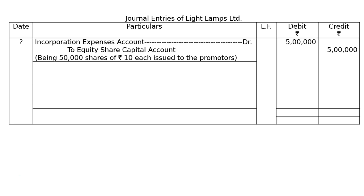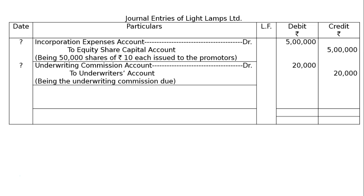Next one: underwriting commission. First it will be made due, then it will be paid. Underwriting Commission Account is debited to Underwriters Account — being the underwriting commission due. Here, the underwriting commission is due, and we are giving 2,000 shares of ₹10 each, that means ₹20,000. We got this ₹20,000 amount from the question.